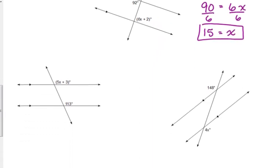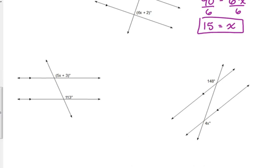All right. So, let's look at this one down here on the left. 5x plus 3 is the variable expression on the top. And 113 is the angle measure down there on the bottom. So, what are those angles called? Corresponding. Corresponding. Perfect.